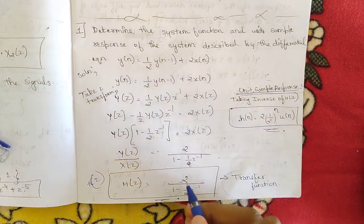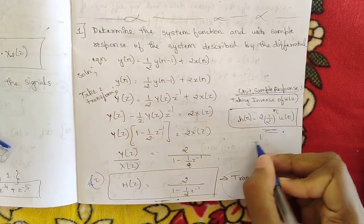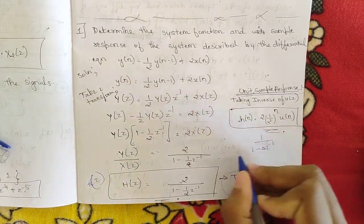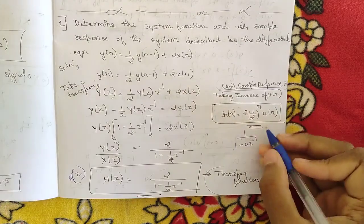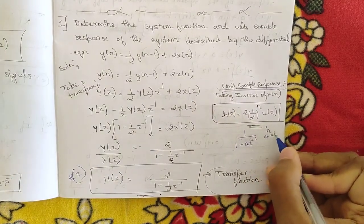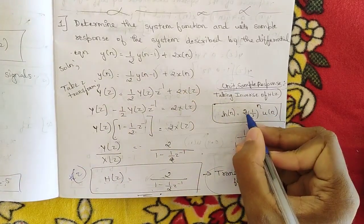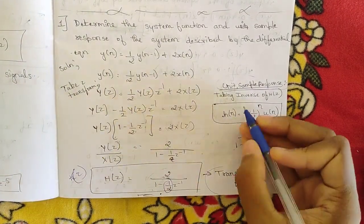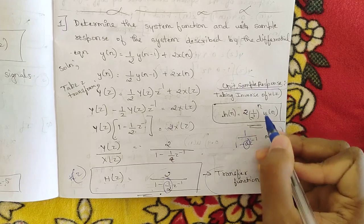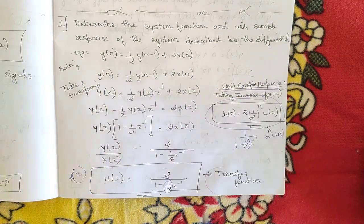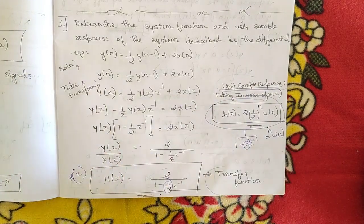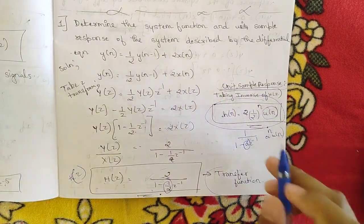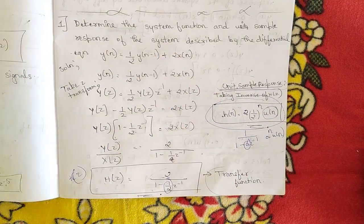Here, 2 is a common factor and a = 1/2, so h[n] = 2·(1/2)ⁿ·u[n]. This is the required unit sample response, where u[n] = 1 for all values of n ≥ 0.